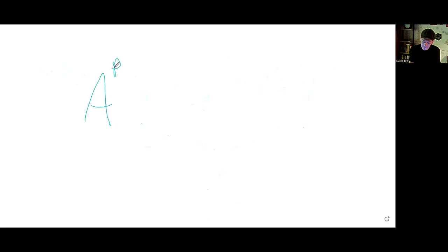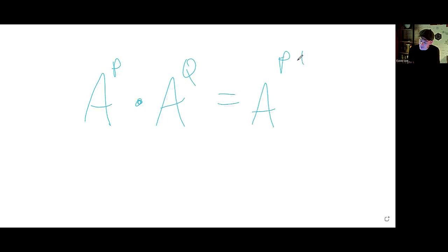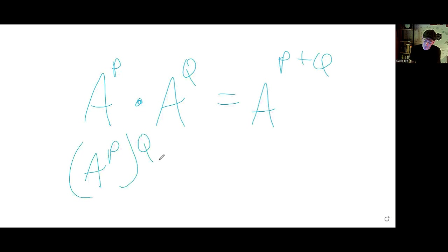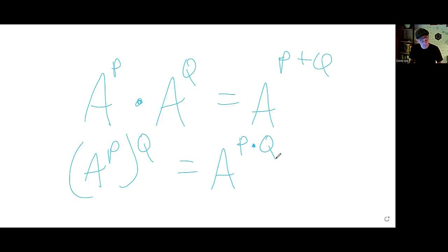The general properties used: a to the p times a to the q equals a to the p plus q; and a to the p, raised to the q, equals a to the p times q. Those two properties were used for number 2.